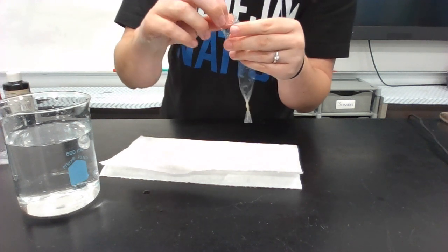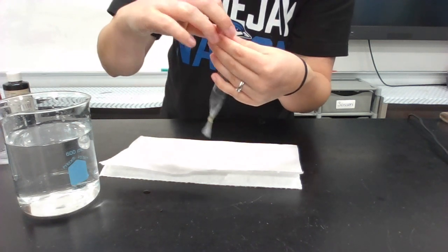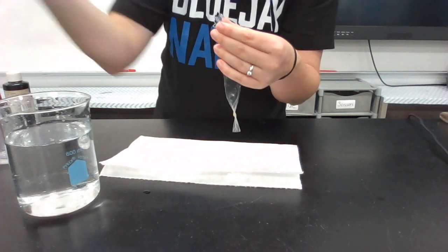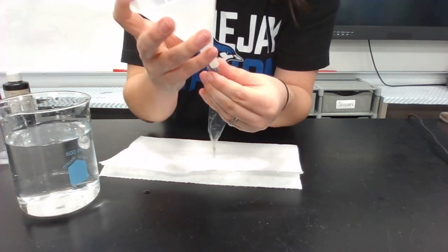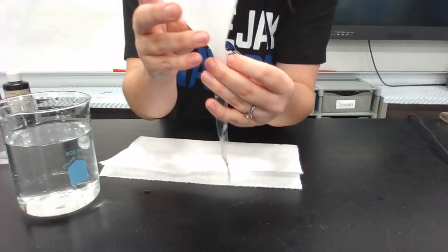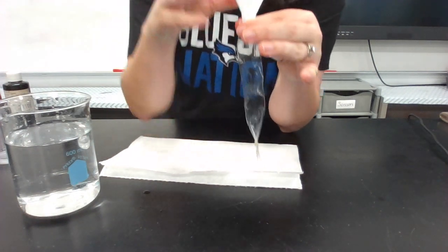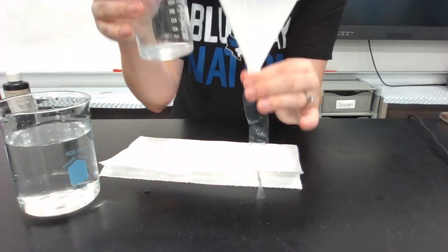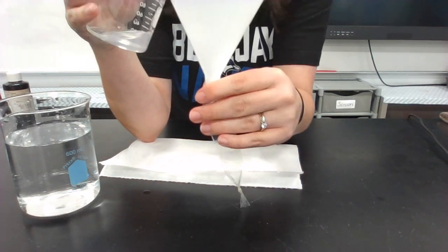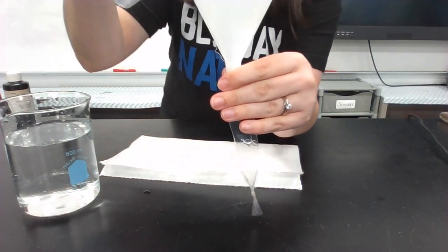So because I tend to make a mess, that's why I'm using my funnel. I'm going to grab that and I'm going to put it into the open end of that dialysis tubing so I can try not to make a mess. Then I'm going to take my 20 milliliters or so of starch solution and I'm going to pour it into the dialysis tubing.